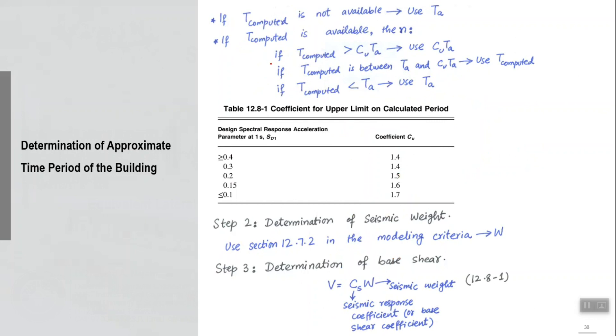If your T computed, which is coming from the modal analysis, eigenvalue analysis or Ritz analysis, if it is not available, you have not run the modal analysis first, then you do not have any option—just use Ta, empirical time period.